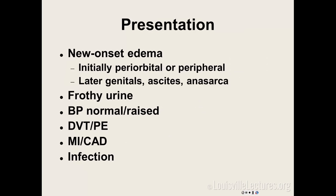In nephrotic syndrome you'll have frothy urine — we sometimes ask patients in clinic if they have foamy urine; it's not very sensitive but we ask. Blood pressure can be normal or increased, usually due to volume-dependent edema. DVTs and PEs are more likely if your albumin is less than two. There's also risk of MIs, coronary artery disease, and infection because of urinary loss of immunoglobulins.